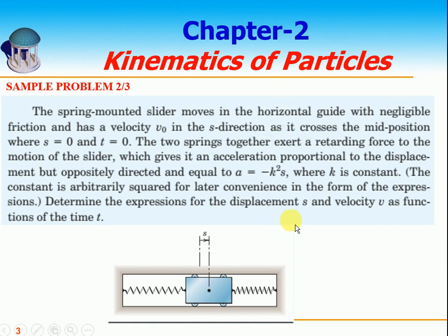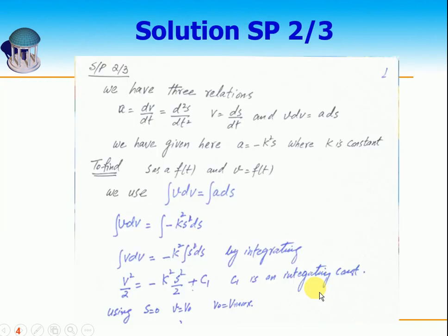In this problem, the acceleration is given as a function of distance, and the initial conditions are T = 0 and S = 0 (the mean position). The body oscillates between two points, with a retarding force a = −k²S. We have three relations: a = dV/dt, a = d²S/dt², V = dS/dt, and VdV = a·dS. To find velocity as a function of displacement, we use VdV = a·dS, so VdV = −k²S·dS.